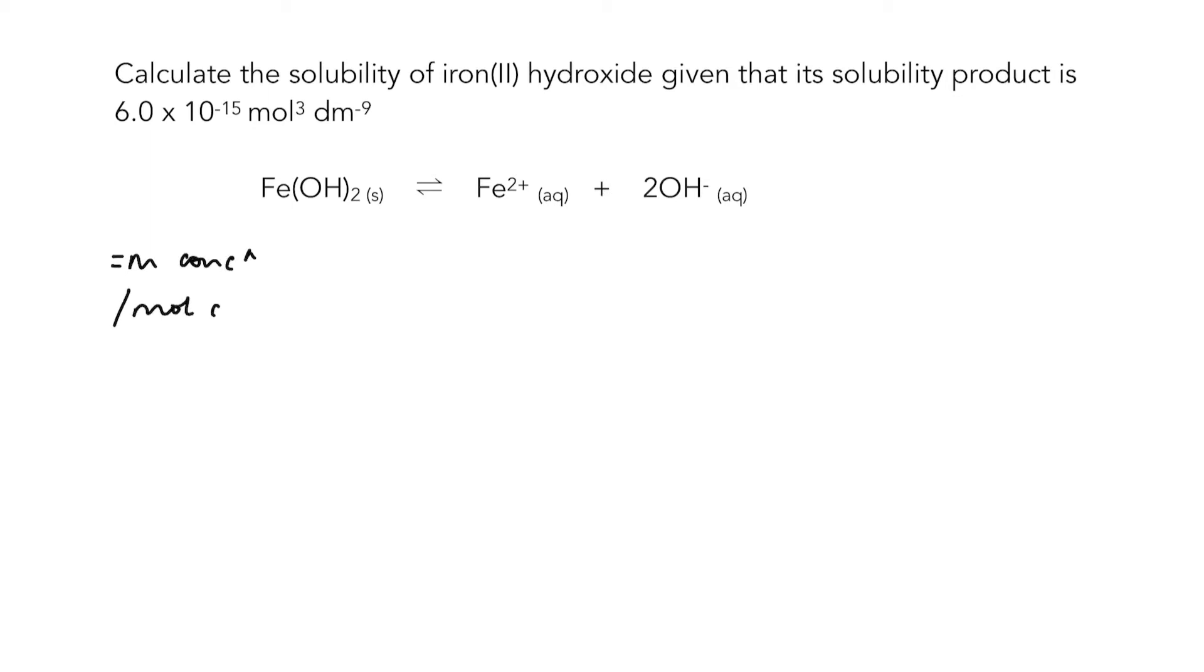Let's call it x. Because the iron(II) hydroxide is a one to two ratio, if I have x number of moles of Fe2+ at equilibrium, I'm going to have 2x number of moles of hydroxide ions.